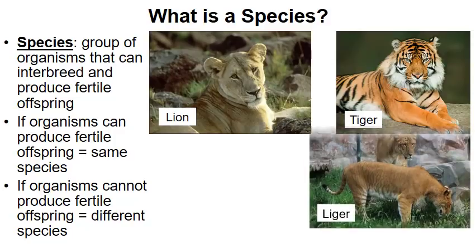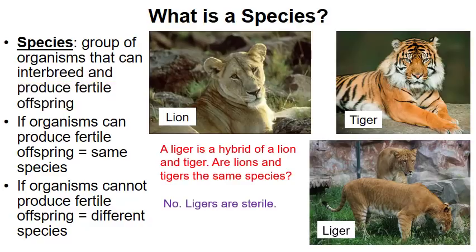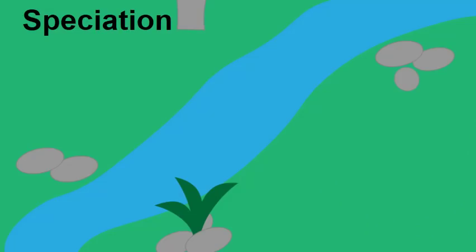A liger is a hybrid of a lion and a tiger. Are lions and tigers members of the same species? It'd be understandable to say yes, but they're not. The definition of a species is not just that they can produce an offspring, but that they can produce fertile offspring. Since ligers are sterile — a male liger and a female liger cannot breed — lions and tigers are different species because they can't successfully create individuals that carry on down the generations.